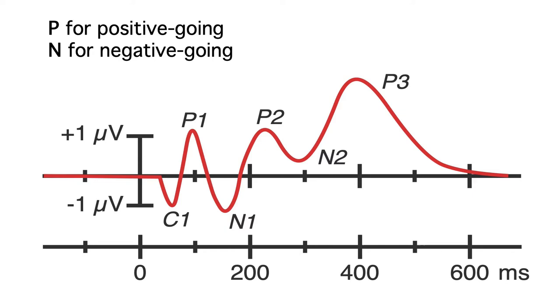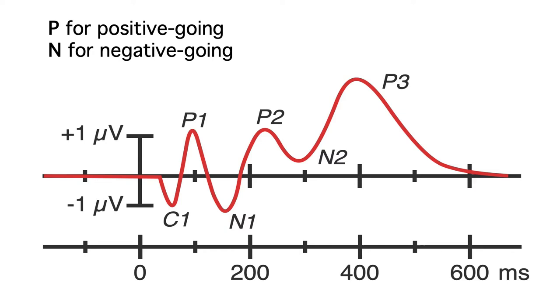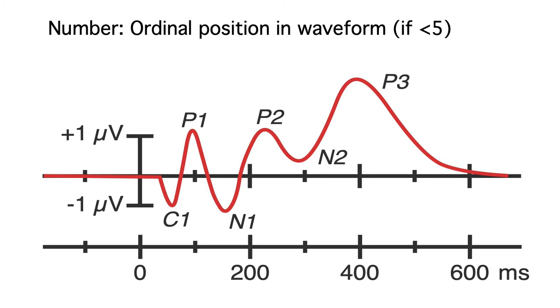The most common convention is to label the peaks with a P or N to indicate positive or negative, followed by a number, like the P3 wave shown here. In some cases, the number indicates the ordinal position in the waveform. For example, P1, P2, and P3 are the first, second, and third major positive components.